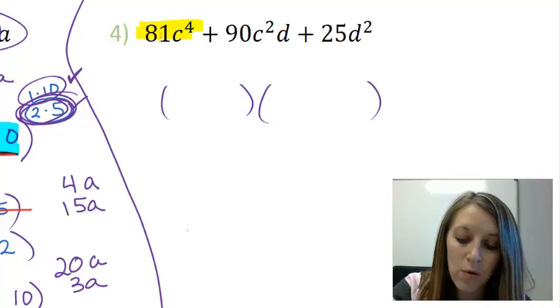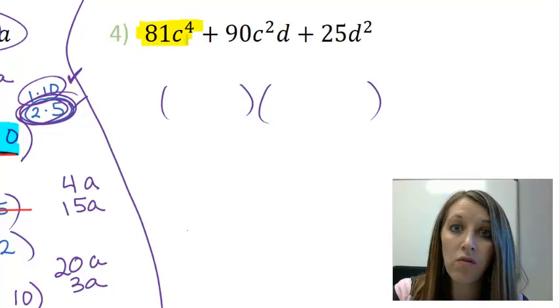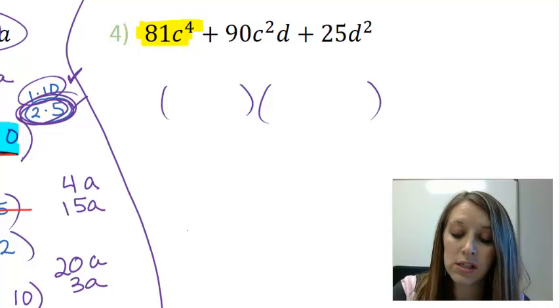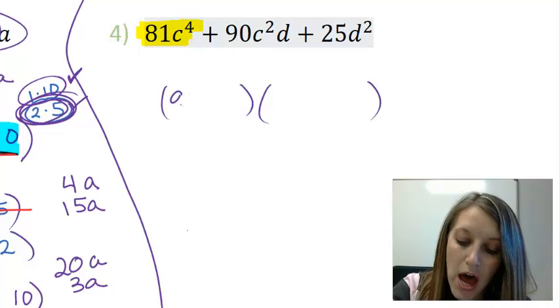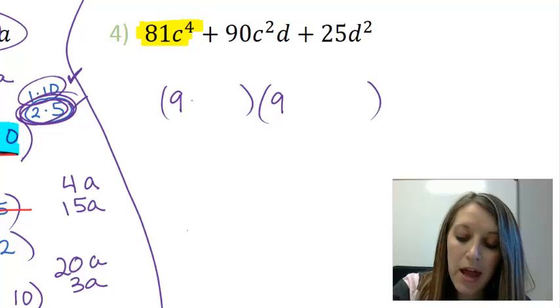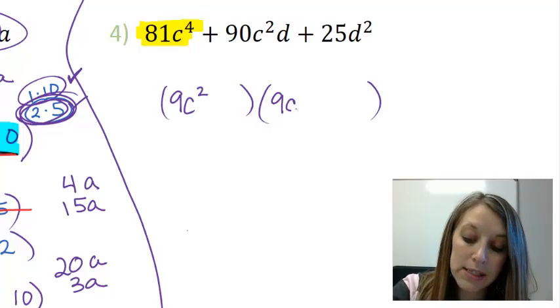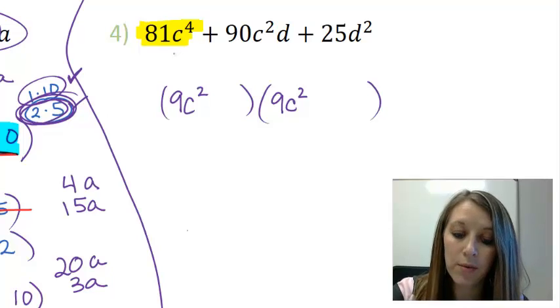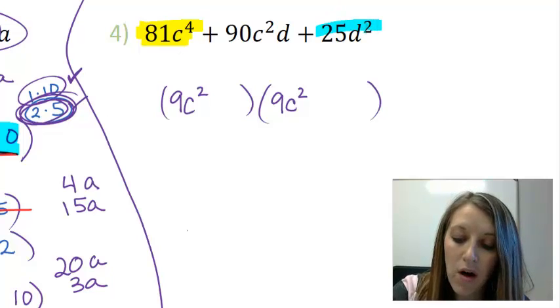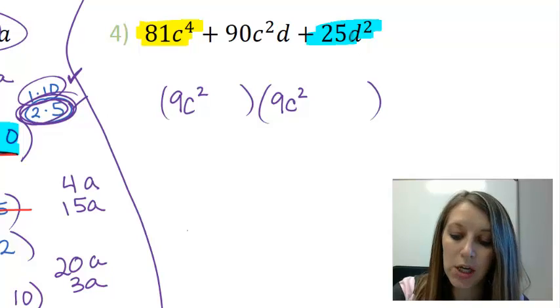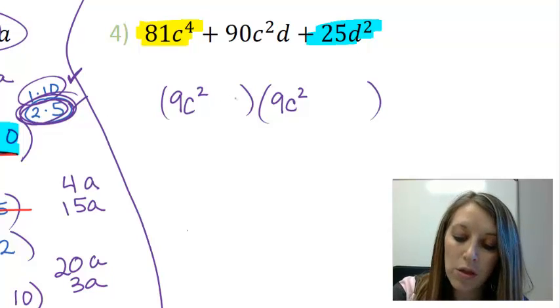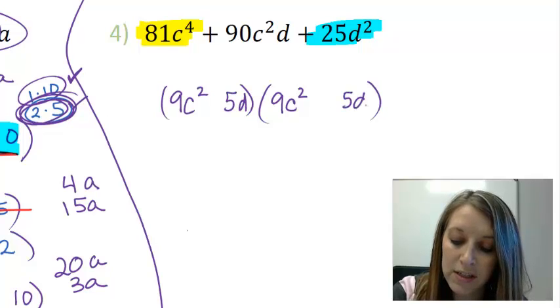So factors of 81C⁴, we have lots of options. I'm going to start with the two factors that are closest together. So I have 9 times 9, and I'm going to have C² times C², because if I add those up, that gives me C⁴. Now let me move on to my last terms here. Again, I have lots of choices to give me that, but I'm going to start with the ones that are closest together. So let me try a 5D times 5D.